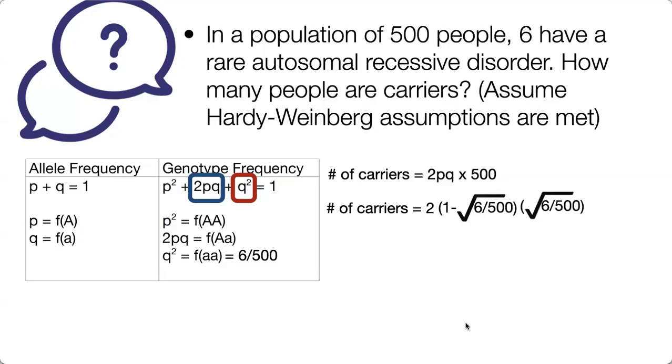This is p and q. We could start with q. So we know that q squared is 6 out of 500, therefore q must be the square root of that.